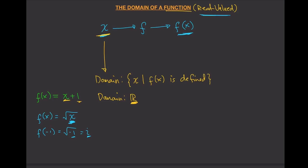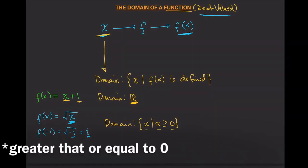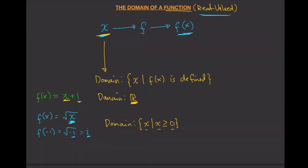So in this case, the domain would be all x such that x is greater than or equal to zero. Any number greater than or equal to zero will produce a valid output, and any number less than zero will not produce a valid output.